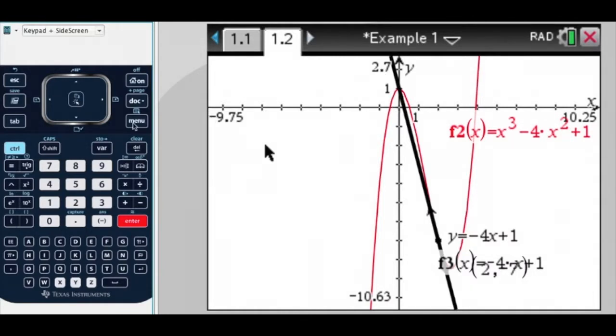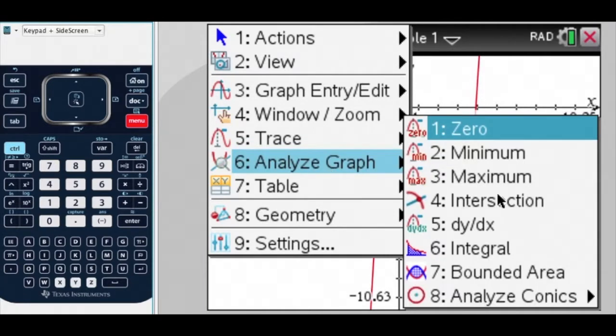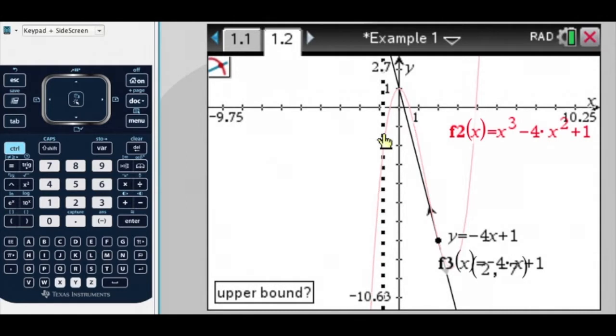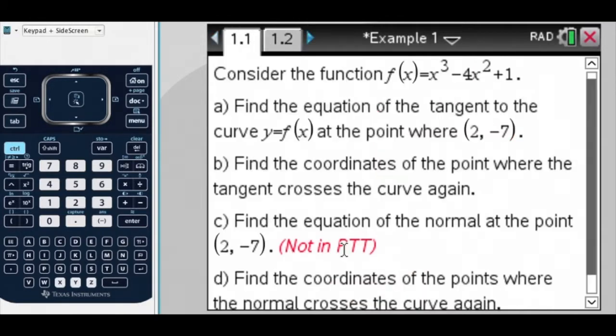So let's find the point of intersection, intersection for this curve, lower bound, upper bound, and there it is there. The point of intersection between the tangent and the curve, the other point, is (0, 1). Now I want to find the normal at this point.